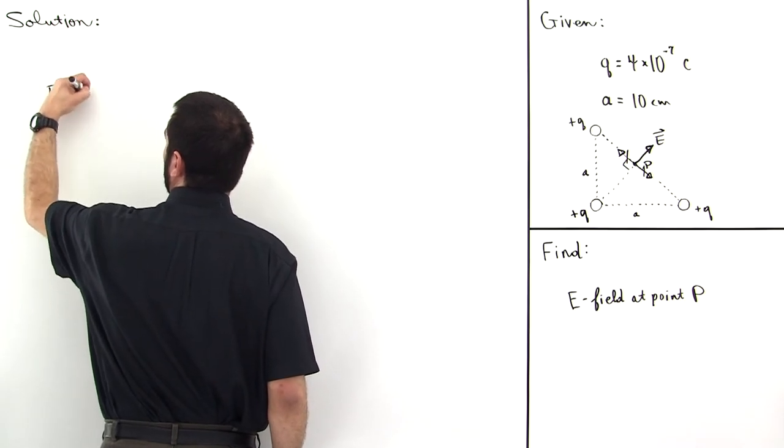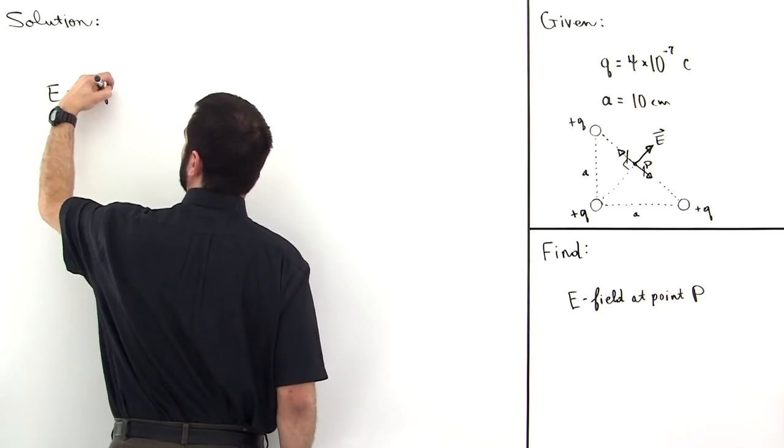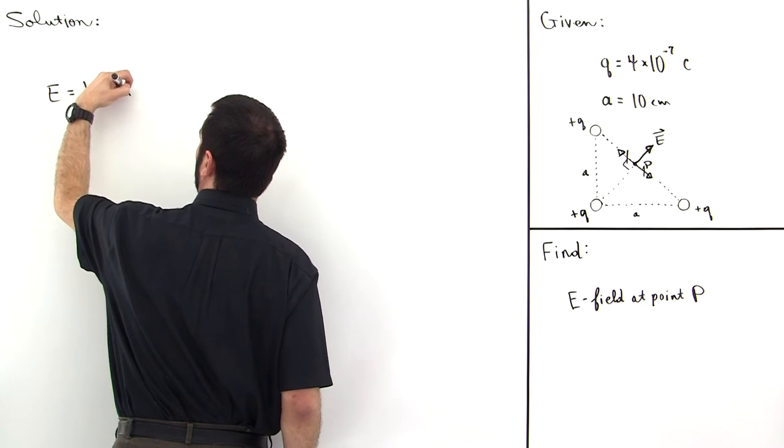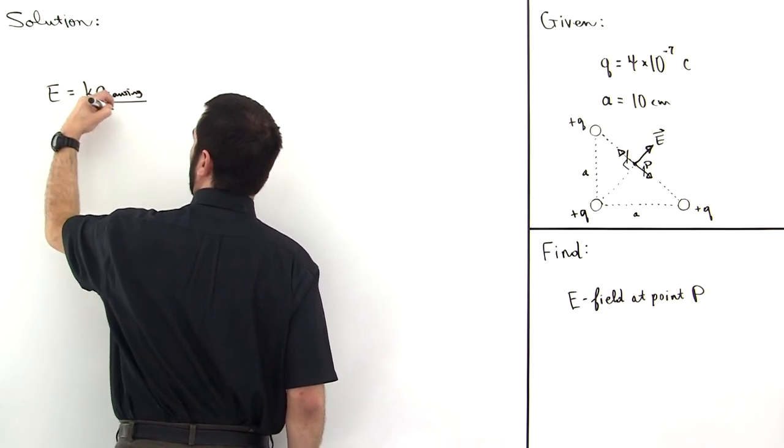Here we go. The magnitude of the E field is given by K times the charge that's causing the E field divided by R squared.